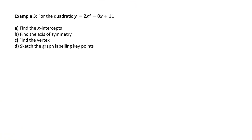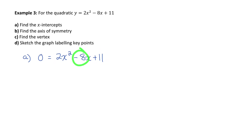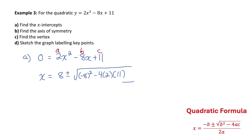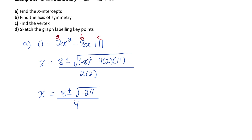Let's go to example 3, the same question for a different quadratic function. We start by finding the x-intercepts by setting y to 0. This quadratic is not factorable — there are no integers with a product of 22 and a sum of negative 8 — so we use the quadratic formula. The discriminant simplifies to the square root of negative 24, which is not a real number, meaning there are no x-intercepts.